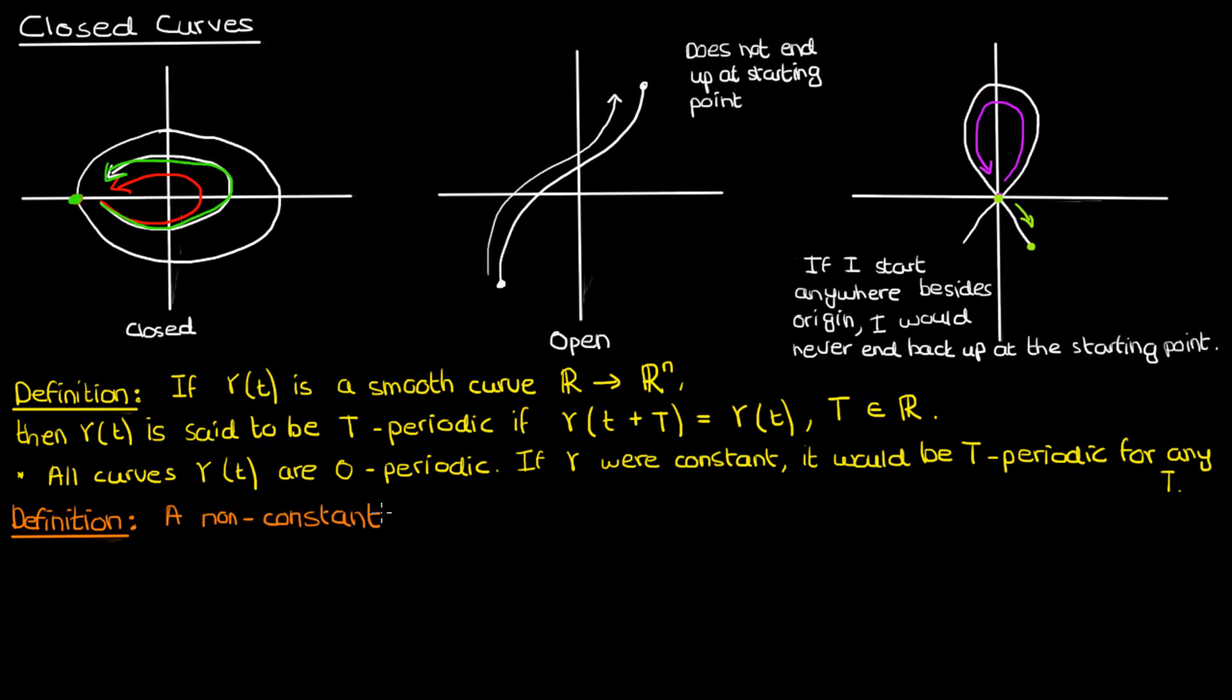A non-constant gamma of t is a closed function if it is capital T periodic and capital T is not zero.